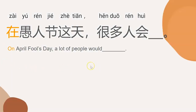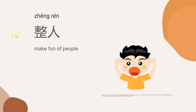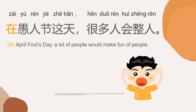Here is the sentence pattern to tell people what people do on this day. If you want to say 'on April Fools' Day, a lot of people would do something,' the pattern is: 在愚人节这天 (zài yú rén jié zhè tiān), 很多人会 (hěn duō rén huì)... Let's read this again: on April Fools' Day, a lot of people would — 在愚人节这天，很多人会.